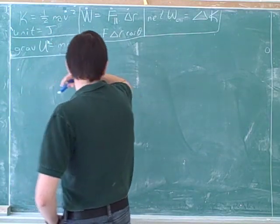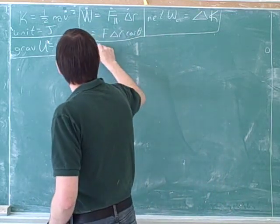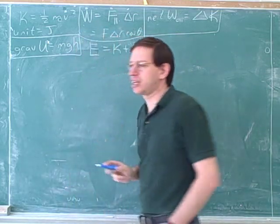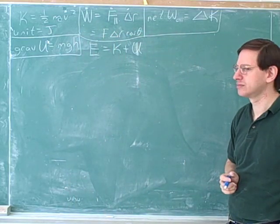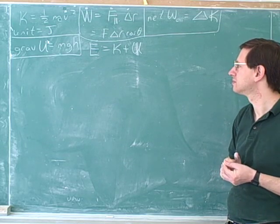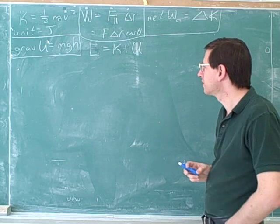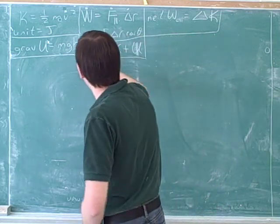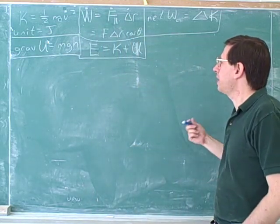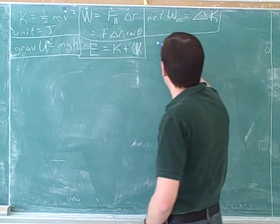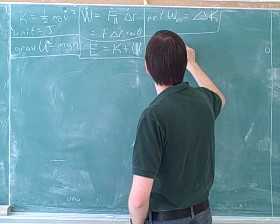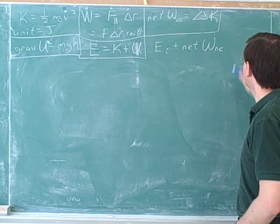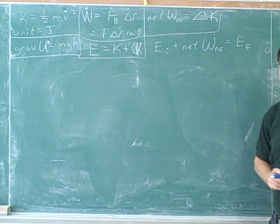We have another concept: mechanical energy. We can use capital E to stand for mechanical energy, and the mechanical energy is just the kinetic energy plus the potential energy. The total mechanical energy is all the kinetic energy plus all the potential energy. The key equation for solving problems is that the initial mechanical energy plus the net work by the non-conservative forces equals the final mechanical energy.